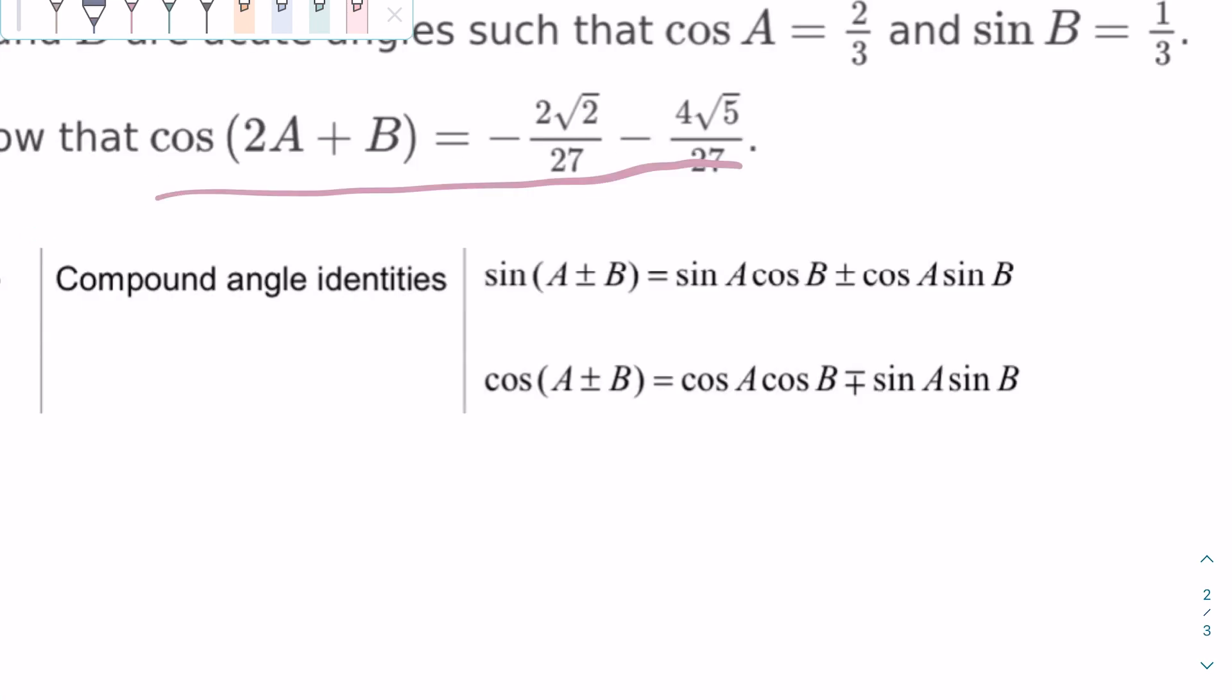We can use the second identity involving cosine. We can make A in this situation equal to 2A and B will remain B. And we will have the plus sign, so we will use the minus in the identity.